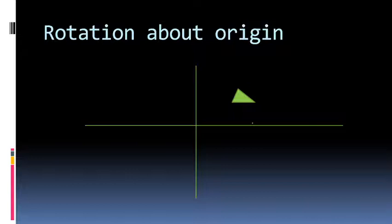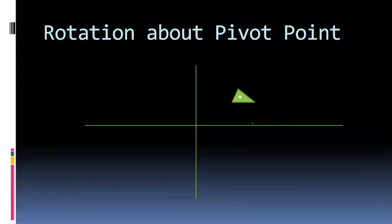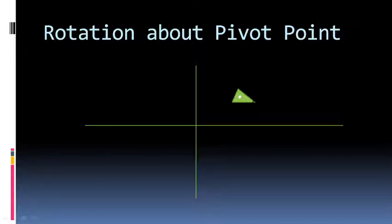If we want to rotate the triangle in some other way — about a different point — that is called rotation about a given point. That point is called the pivot point, about which all three vertices rotate along their respective circular paths. This rotation takes place about a given point called the pivot point.